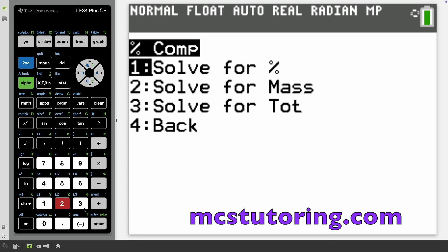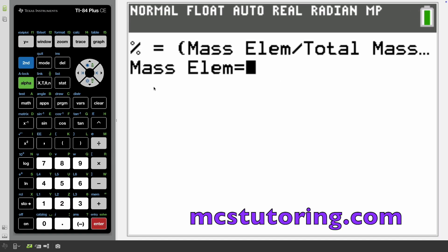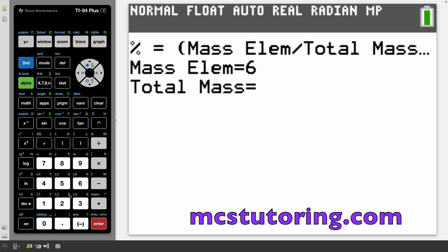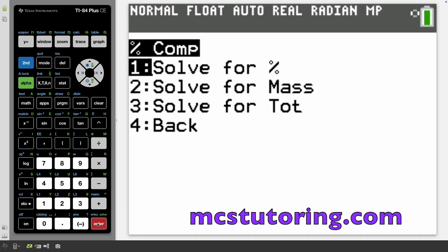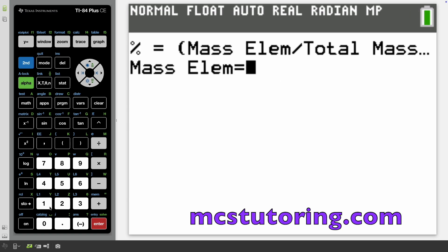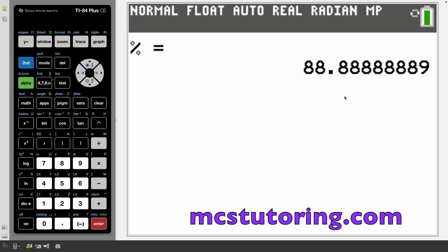Let's go to percent composition. You can solve for percent, solve for mass, and solve for the total. Let's solve for percent. The mass of water is 16, and because that's H2O, there's two H's, so the total mass is 18. The percent of oxygen in H2O is 88.8%.